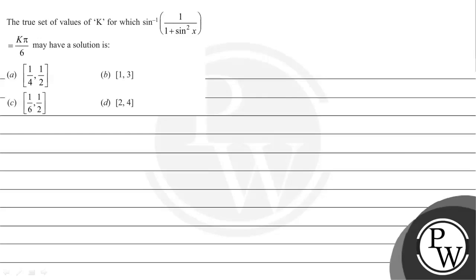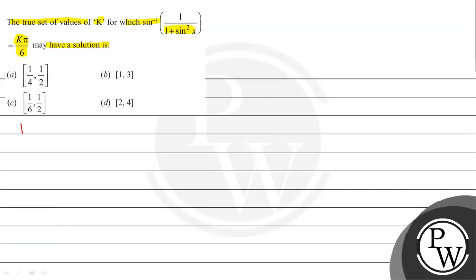Hello, let's read the given question. The question states that the true set of values of k for which sin inverse of 1 by (1 plus sin squared x) equals k times pi by 6 may have a solution is — and the options are given below. The key concept that we will use here to solve this question is the range of sin x.